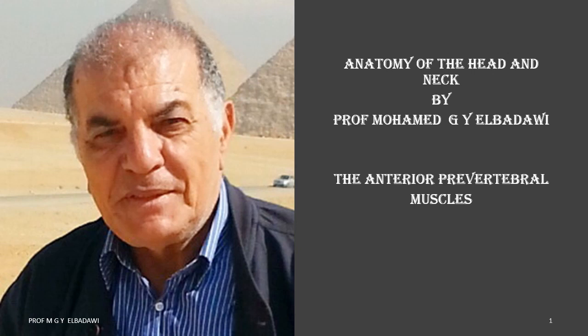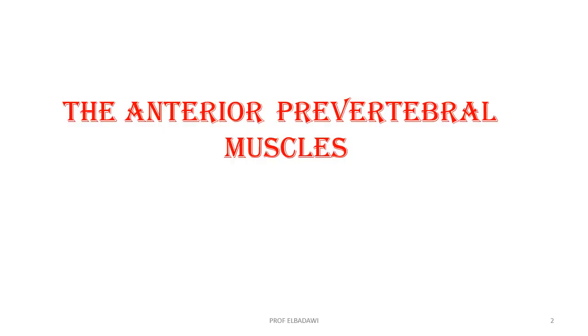In this part, we are going to describe the anterior pre-vertebral muscles. The anterior pre-vertebral muscles are the group of muscles which lie in front of the cervical vertebrae, in the neck.